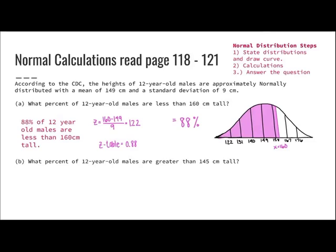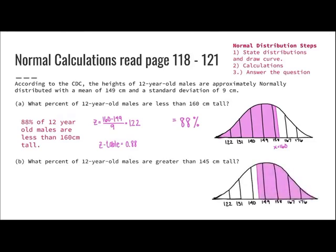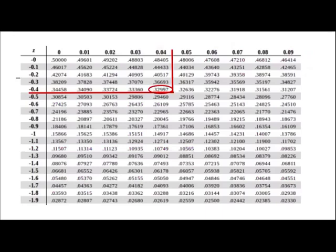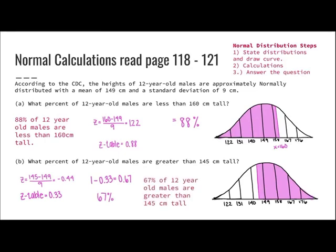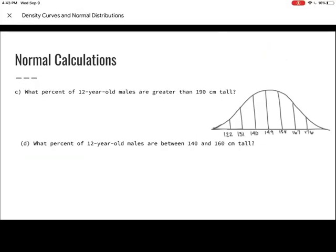What percent of 12-year-old males are greater than 145 centimeters tall? Starting with my chart, 145 is not a standard deviation, so I find the Z-score: (145 minus 149) divided by 9 equals negative 0.44. Using the Z-table, I get 0.3300. Since I'm shading to the right, I subtract from 1: 1 minus 0.33 equals 0.67, which is 67%. So 67% of 12-year-old males are greater than 145 centimeters tall.